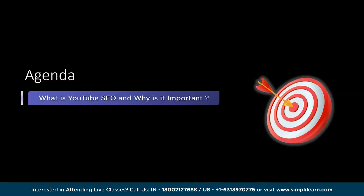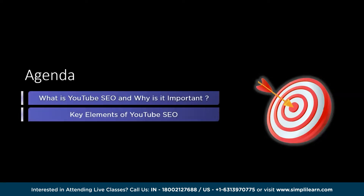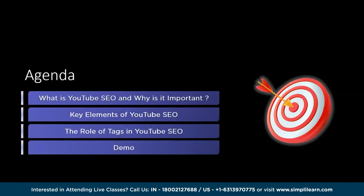It understands how YouTube works, making it easier for your videos to get noticed. In this video we will understand what is YouTube SEO and why it is important, key elements of YouTube SEO, the role of tags in YouTube SEO, and how to use ChatGPT for YouTube SEO — including writing descriptions, tags and titles in just one click, with hands-on demo examples.